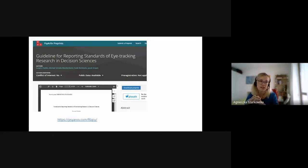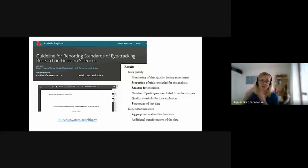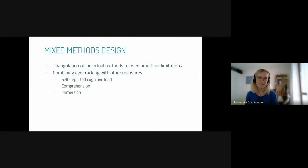I've come across quite an interesting publication. It's a preprint, a guideline for reporting standards of eye tracking research. The authors provide a list of what should be reported in an eye tracking study: information on the quality of data, percentage of trials excluded, what were your reasons, number of people, quality threshold, percentage of lost data, all sorts of things. It's really super interesting. It's important to remember, if you want to do an eye tracking study, eye tracking is not your only solution. It's always good to combine eye tracking measures with other measures like self reports, comprehension, immersion, etc., and then you triangulate all those individual methods.